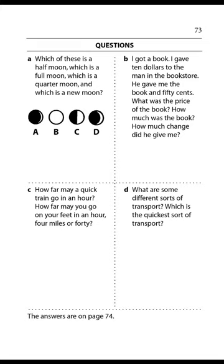Page 73. Questions. Which of these is a half moon? Which is a full moon? Which is a quarter moon? And which is a new moon? C is a half moon. B is a full moon. D is a quarter moon. And A is a new moon. I got a book. I gave ten dollars to the man in the bookstore. He gave me the book and fifty cents. What was the price of the book? The price of the book was nine dollars and fifty cents. How much was the book? It was nine dollars and fifty cents. How much change did he give me? He gave me fifty cents change.